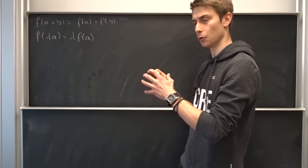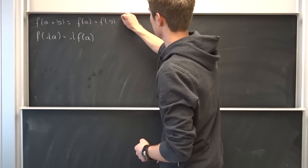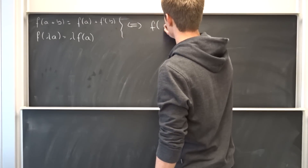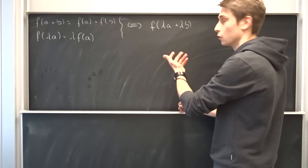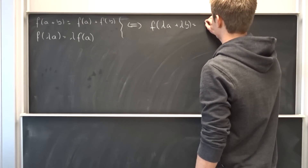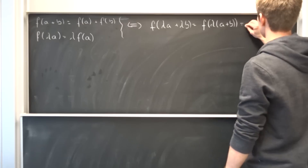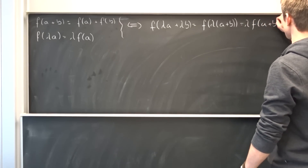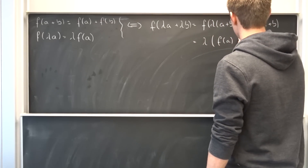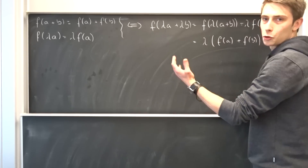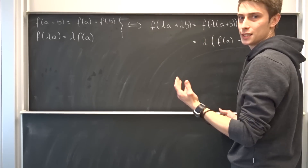We can combine those two properties and say that this is equivalent to f(λa + λb). You can also use a different constant, for example gamma or whatever you wish. This is equal to f(λ(a + b)). We can bring lambda to the outside, so that's λ·f(a + b), and using the first property, that's λ·(f(a) + f(b)). If this holds, our operator is indeed linear.